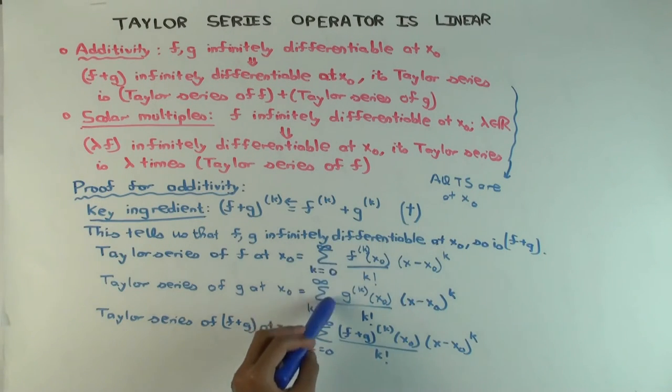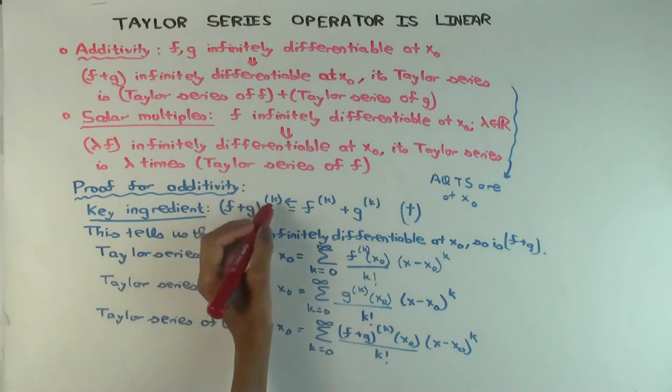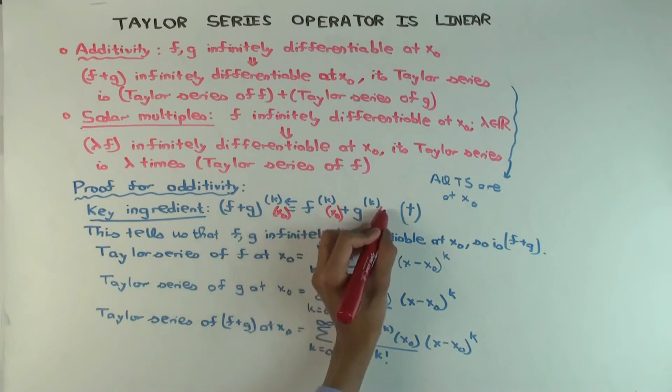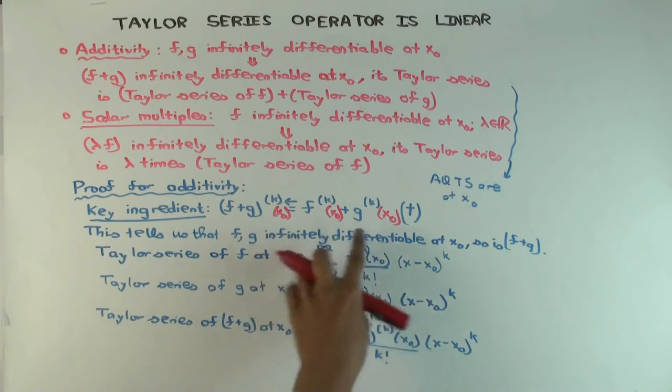Okay. Now I want to claim that when I add these two I get this. Do you see why that's true? When I add these two, why do I get this? Because the key ingredient, linearity of... Well actually, I should have been a little more specific. This thing is true wherever the right side is defined. And in particular, it's true at x0. So this is true at x0, right?